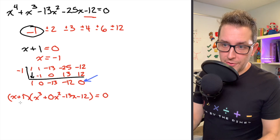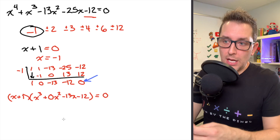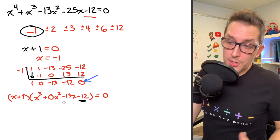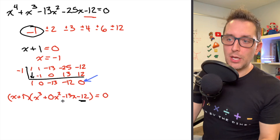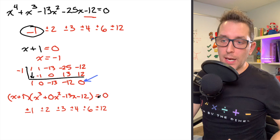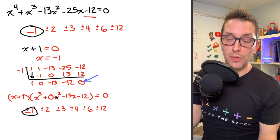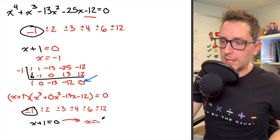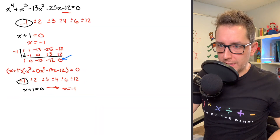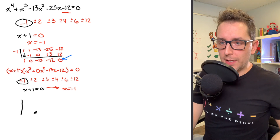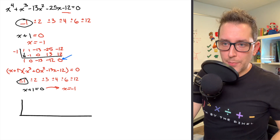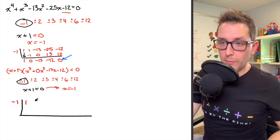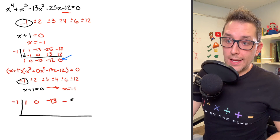Since we're working with a cubic that still needs to be factored, I'm going to apply the exact same process again. I'll look for factors of the constant term negative 12, and choose a factor that when substituted into the equation gives me 0. We already know negative 1 works, so x plus 1 is again a factor, and x equals negative 1 makes the cubic equal to 0. This time I'll use the coefficients from our cubic — 1, 0, negative 13, and negative 12 — on the outside of a new synthetic division table with negative 1.